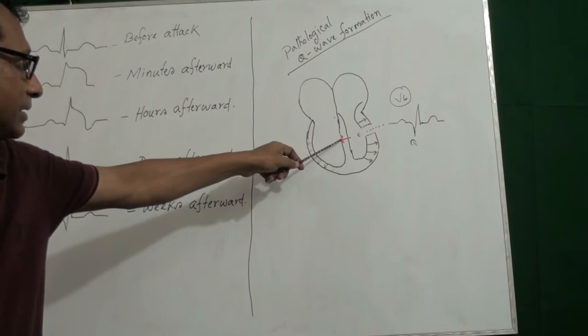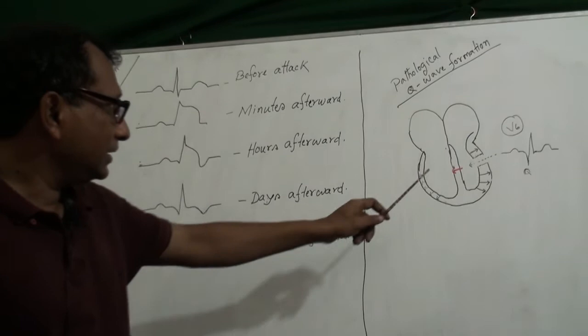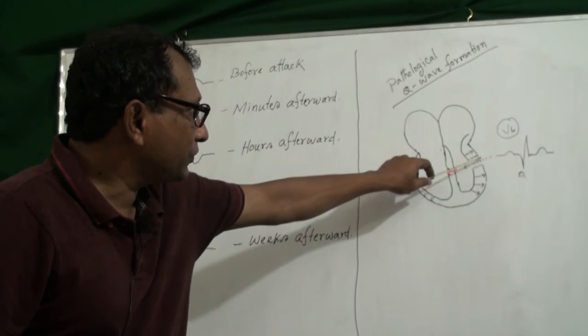This septal activation, that is, this impulse passes away from this chest lead. Normally, these impulses produce Q wave. But when a window is formed, these impulses produce a deep Q wave, that is pathological Q wave.